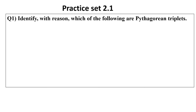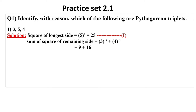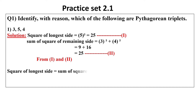So here, to remember this point, let's start practice at number 2.1. Question number 1: identify which of the followings are Pythagoras triplets? The first one is given 3, 5, 4. Solution: square of longest side — 5 among these 3 numbers — square of 5 is 25, give equation number 1. Sum of square of remaining sides, 3 and 4: square of 3 is 9, square of 4 is 16, so here we get 25, give equation number 2. From equation 1 and 2, square of longest side is equal to sum of square of remaining sides. So 3, 5, 4 is a Pythagorean triplet because equation 1 equals equation 2. If equation 1 is not equal to equation 2, then we say it is not a Pythagorean triplet.